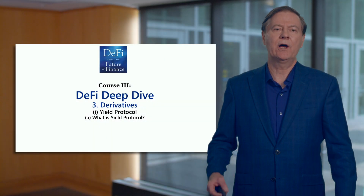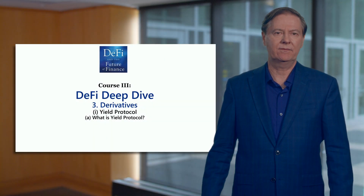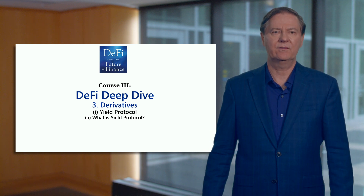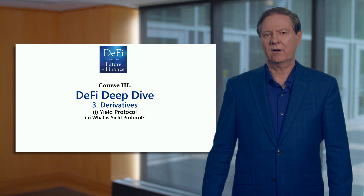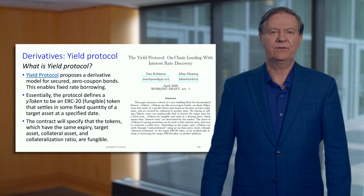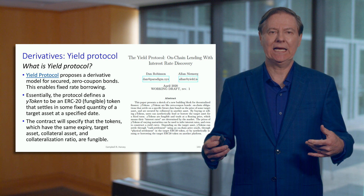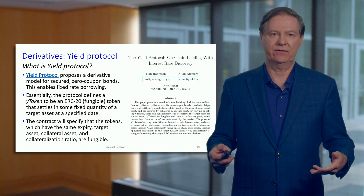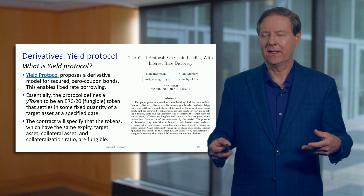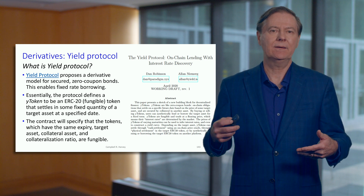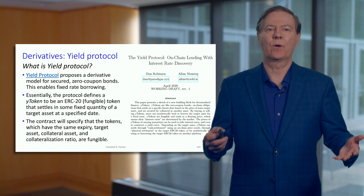The third module in DeFi Deep Dive focuses on derivatives, and we'll talk about a couple of protocols in some detail, but I want to start with yield protocol. Yield protocol is essentially a way to get a rate that is relatively fixed. Think about the yield protocol as creating a condition like a zero-coupon bond.